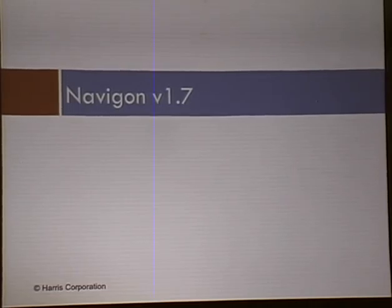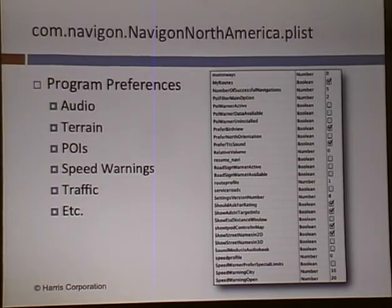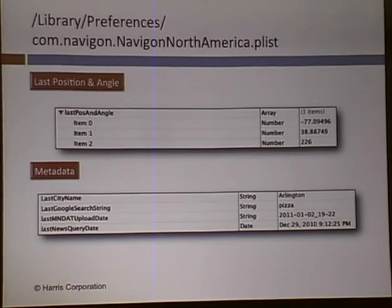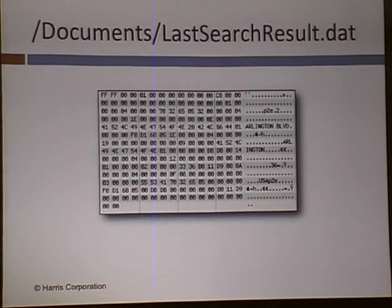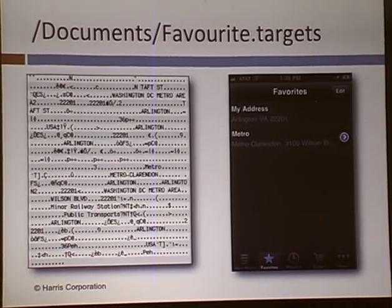Navigon — this is one of the only apps I actually purchased. It stores boring program preferences but also my last position and angle, the last Google search string I had, and the last city name I looked up. There's a document that stores my last search result data — not in the prettiest format, but if you copy it to another phone using the tools I mentioned, you can view my favorites in a much more readable format, along with recent targets.